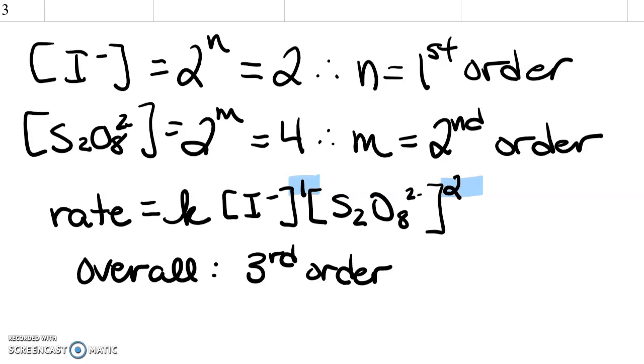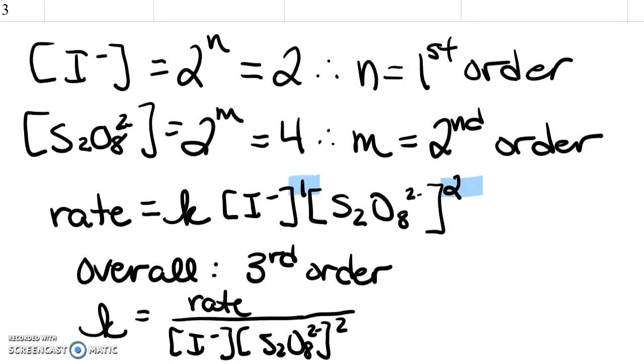And based on that information, you can then solve for K by using one of the trials and one of the particular temperatures, and you would be putting the rate over your concentrations in that case. So just be careful that when you're doing that, that you do not forget to square the S2O8 concentration and that essentially the denominator portion is this quantity put together. So based on that, you should be able to now find the value of K and that will finish out this particular assignment.